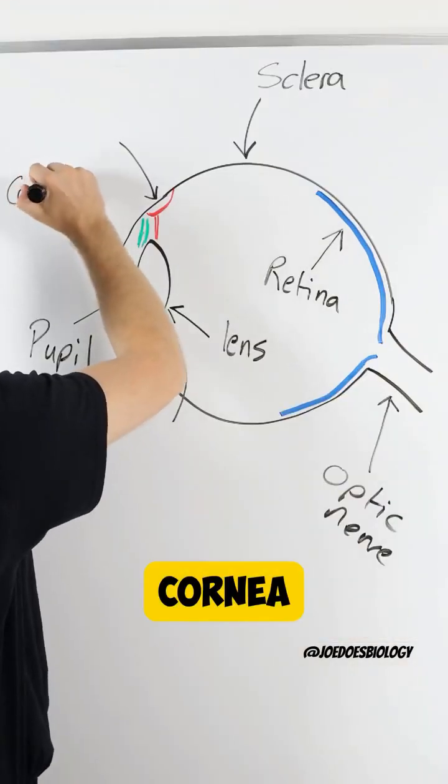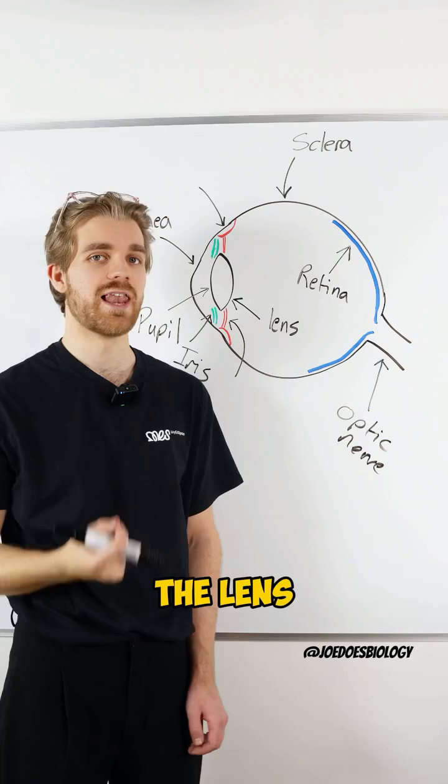Over here we have the cornea. The cornea protects the pupil and the lens.